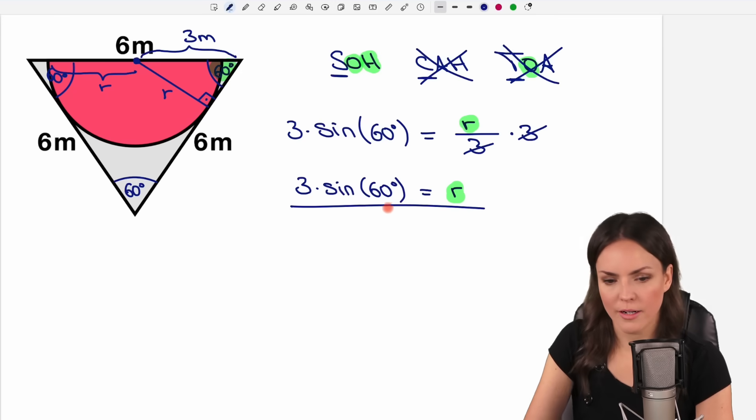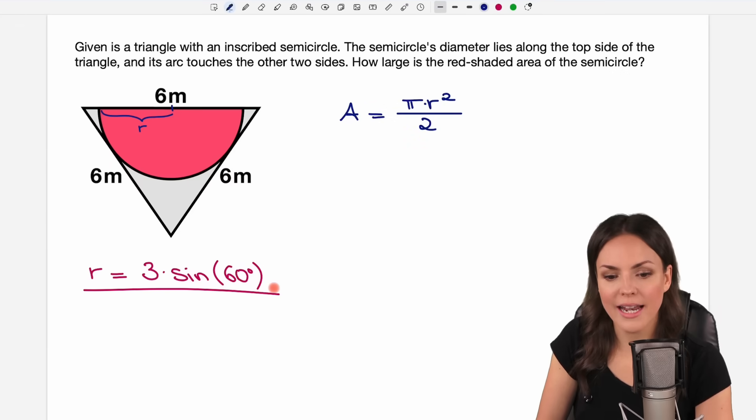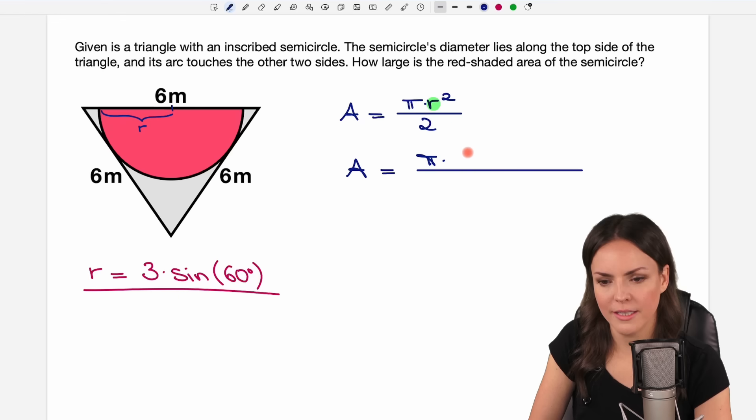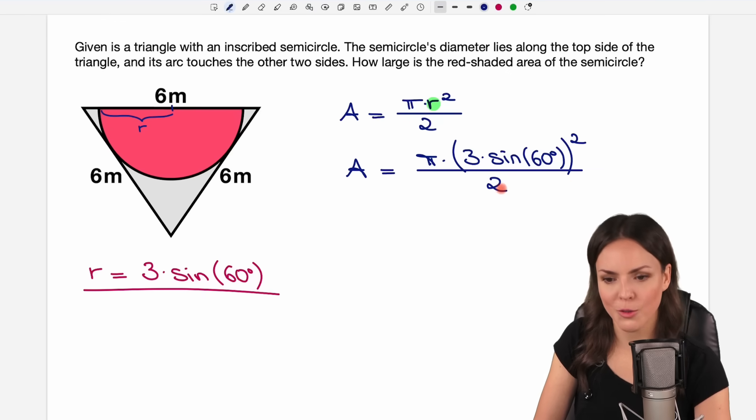And now we put it into our formula from the beginning for our radius. So the area of our semicircle equals pi times, now we take our value here, write it down here because this radius has to be squared. So we write it in parentheses and square it and then we divide this by two.